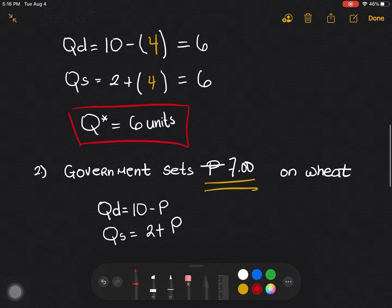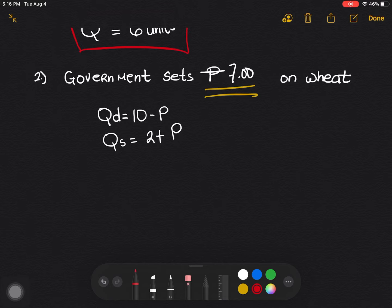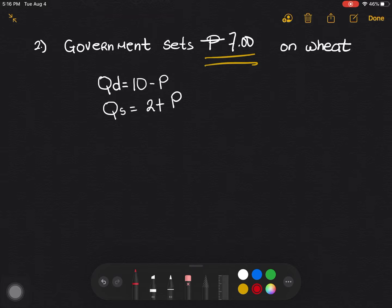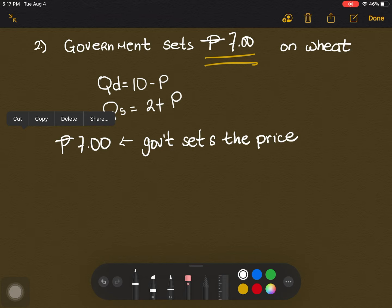So the second question here is, what will happen if government sets the price at 7 pesos on wheat? So for easy reference, I already wrote here the quantity demand and quantity supply. Now again, it's very important for us to understand that the government sets the price. So technically, we will no longer need to compute the equilibrium price because the government sets the price.